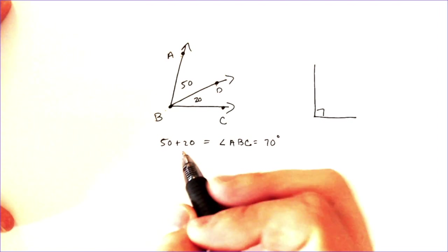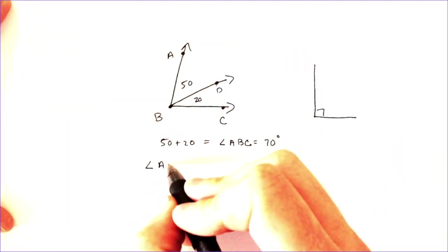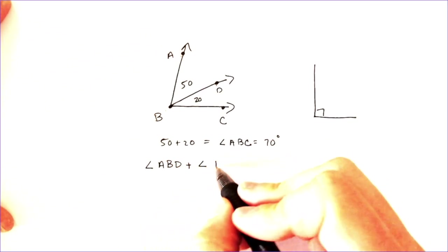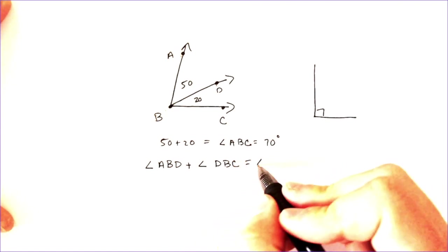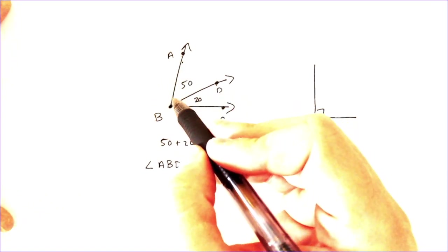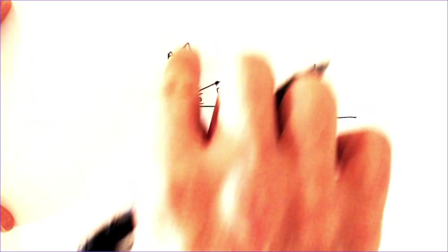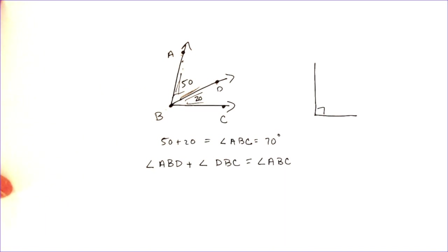What that would look like notation-wise would be angle ABD added with angle DBC is equal to angle ABC. So, if you take this angle, the small angle, the 50, and the 20, and add them together, you get the whole thing. So, that is the concept we are going to be doing today for the rest of our problems.